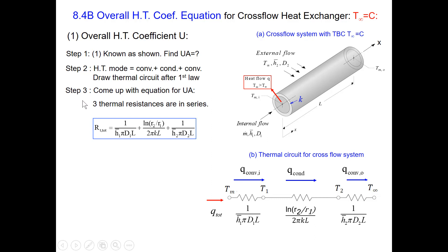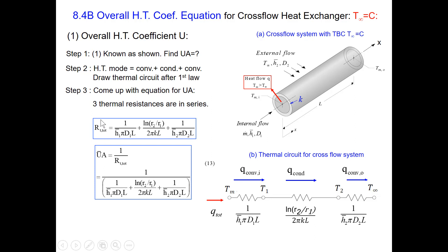Step 3: come up with our equation for UA. Since these three thermal resistances are in series, the total thermal resistance is the summation of these three. Next, we plug RT total into the definition for UA, then get the equation for UA.